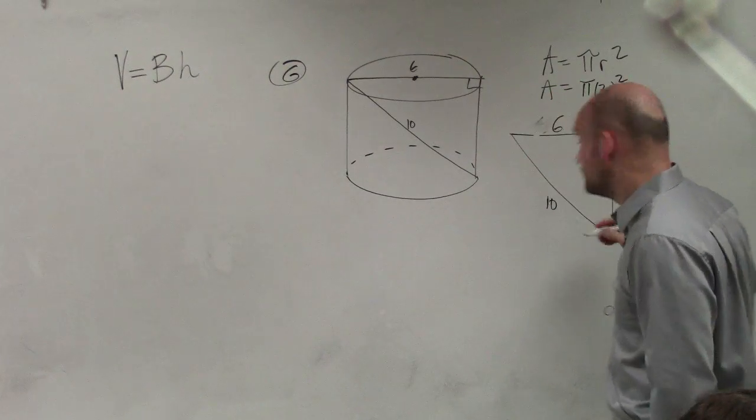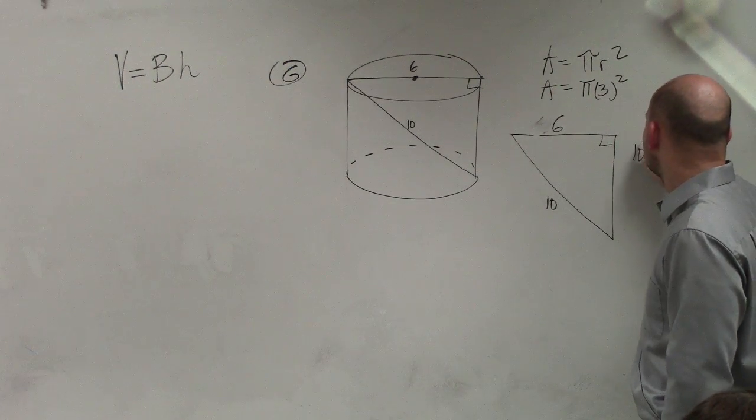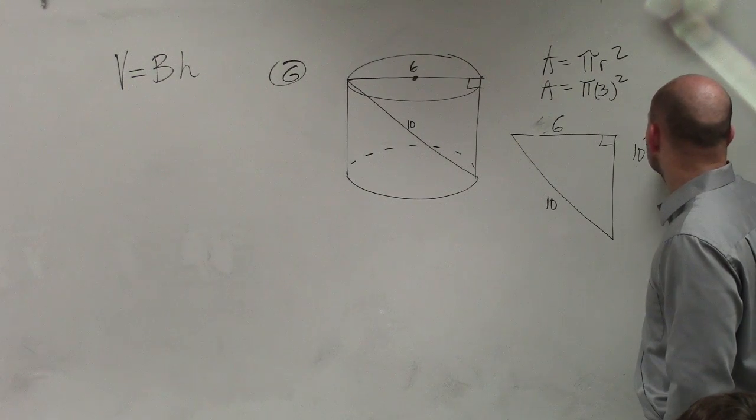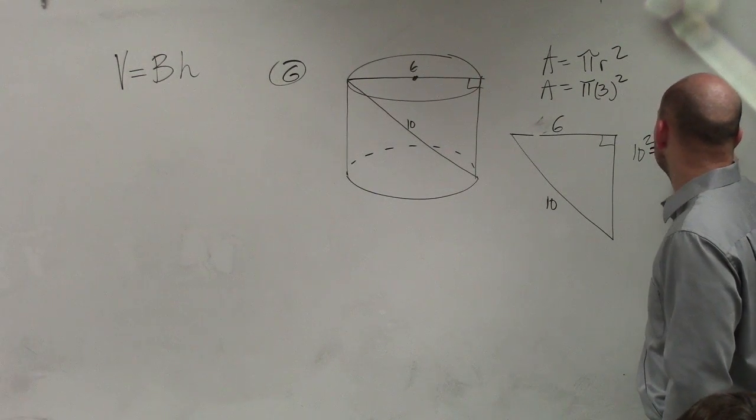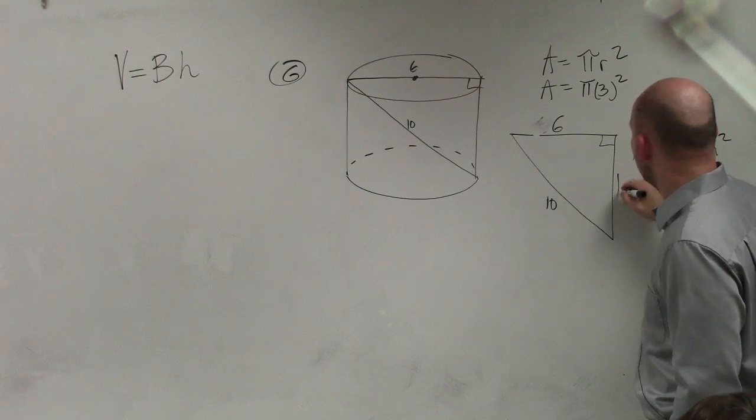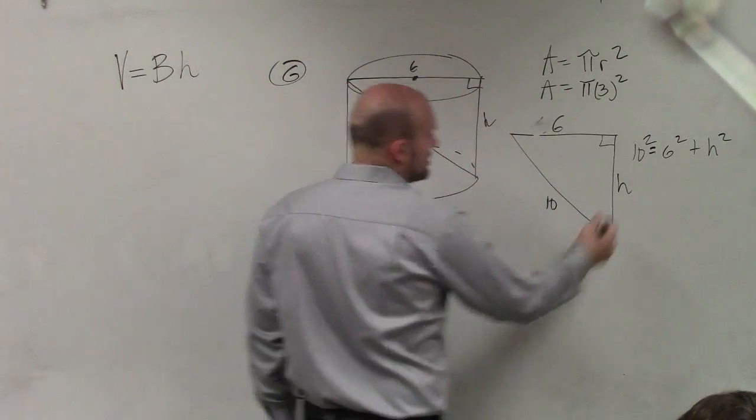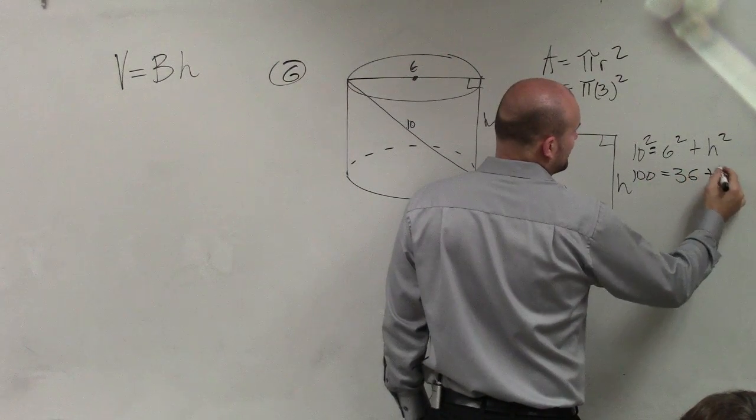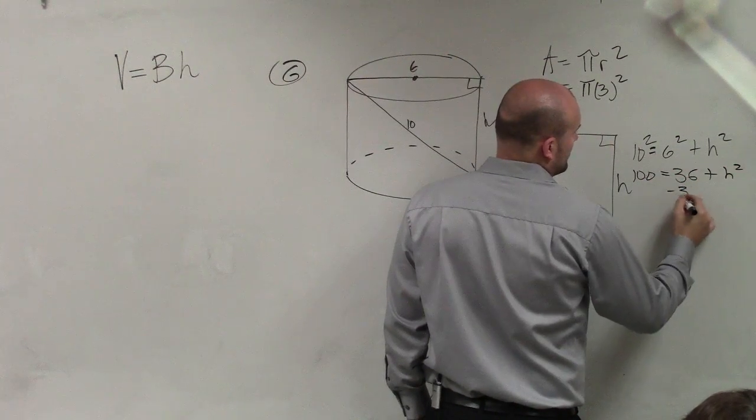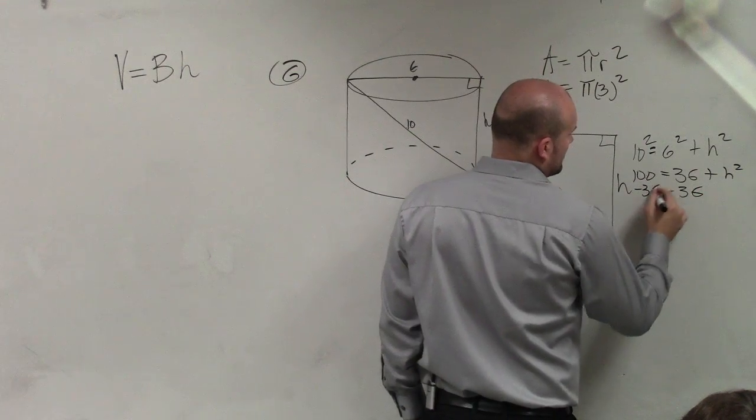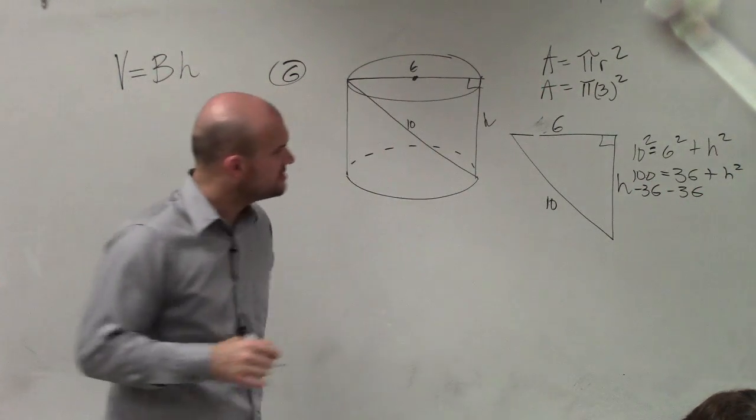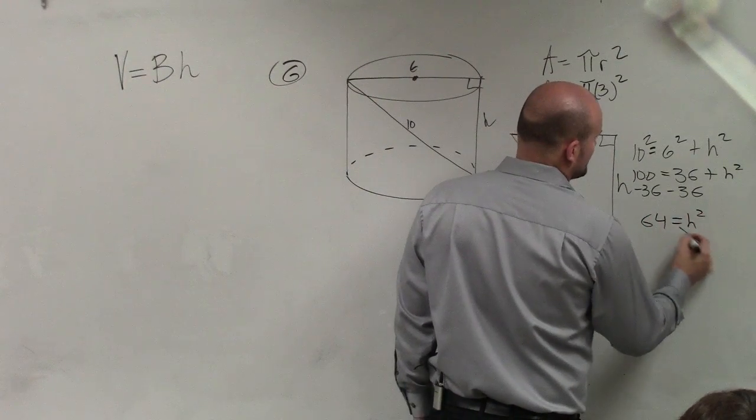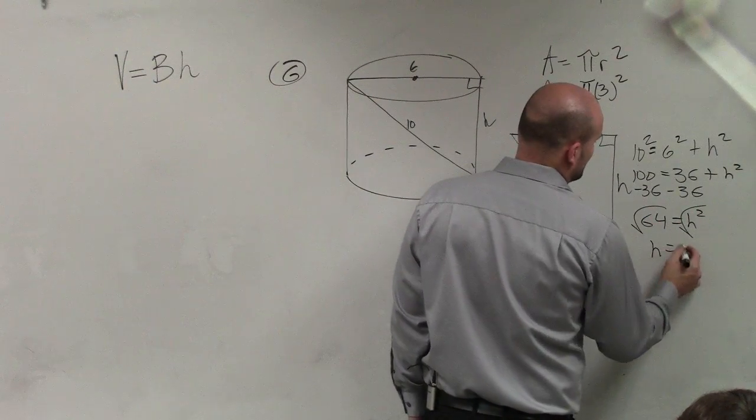Now you should hopefully know this is a Pythagorean triple, but it's OK if you don't. So 10 squared equals, let's just call 6 squared plus h squared, where h represents the height. So therefore, I have 100 equals 36 plus h squared minus 36, minus 36, 64. 64 equals h squared, square root, square root, h equals 8.